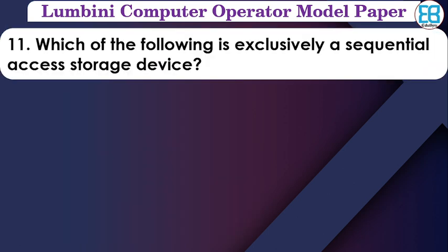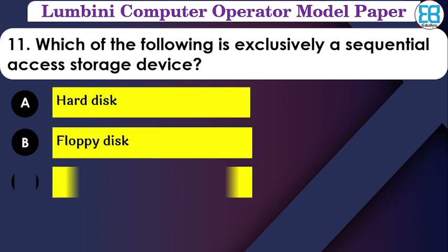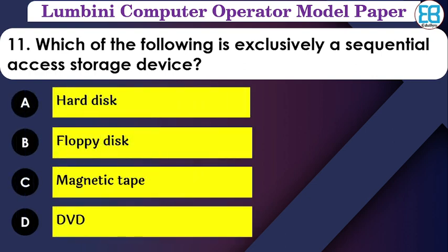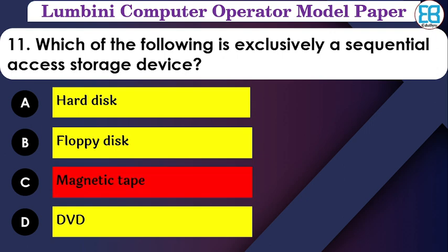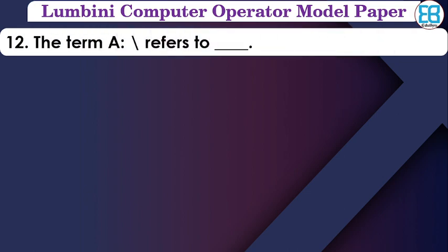Which of the following is exclusively a sequential access storage device? Sequential access storage devices are those accessed in order. The options are: hard disk, floppy disk, magnetic tape, and DVD. The correct option is magnetic tape.